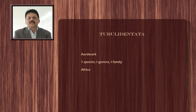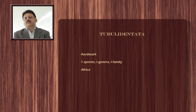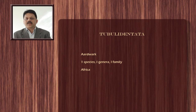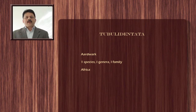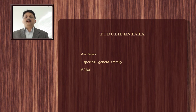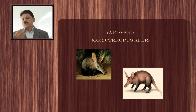The third order is Tubulidentata, a very unique order with only a single species — the aardvark. Something interesting about the aardvark is that it is the first animal to appear in the English dictionary, because its spelling begins with double A (AAR). Tubulidentata is also confined to the continent of Africa. The aardvark is a very distinctive species with a pointed snout and pig-like nose, and it is essentially a nocturnal animal.